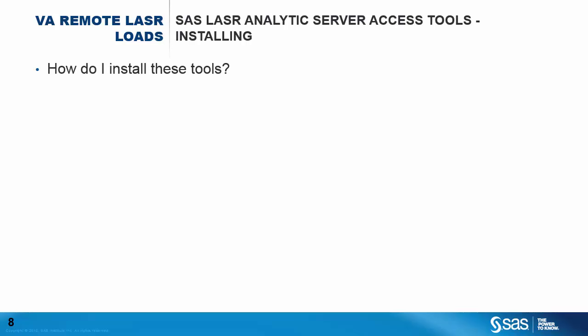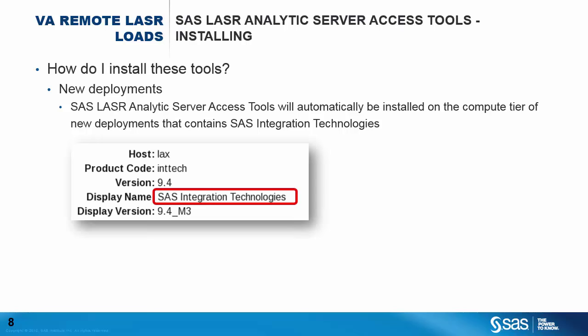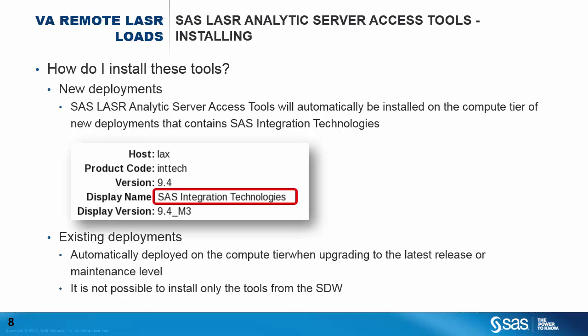If the tools are not installed, installing them is pretty straightforward. If you have a new SAS solution deployment, as long as it contains SAS Integration Technologies at SAS 9.4 maintenance level 3, then the tools are installed on the compute tier. The screenshot from the Deployment Registry report indicates that this deployment is already at the current maintenance level. If you have an existing deployment that precedes SAS 9.4 maintenance level 3, then upgrading to that maintenance level will install the tools. Please note that it is not possible to install these tools by themselves.